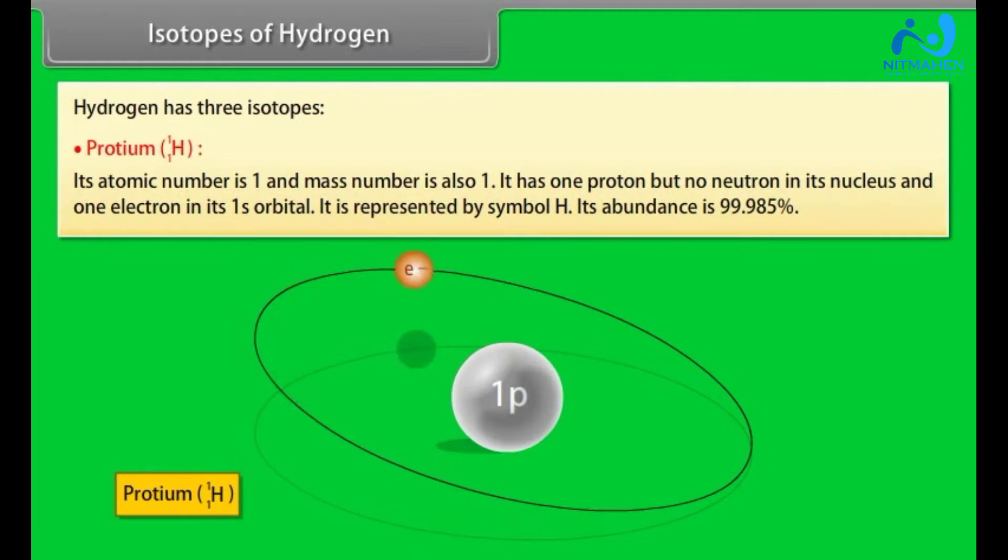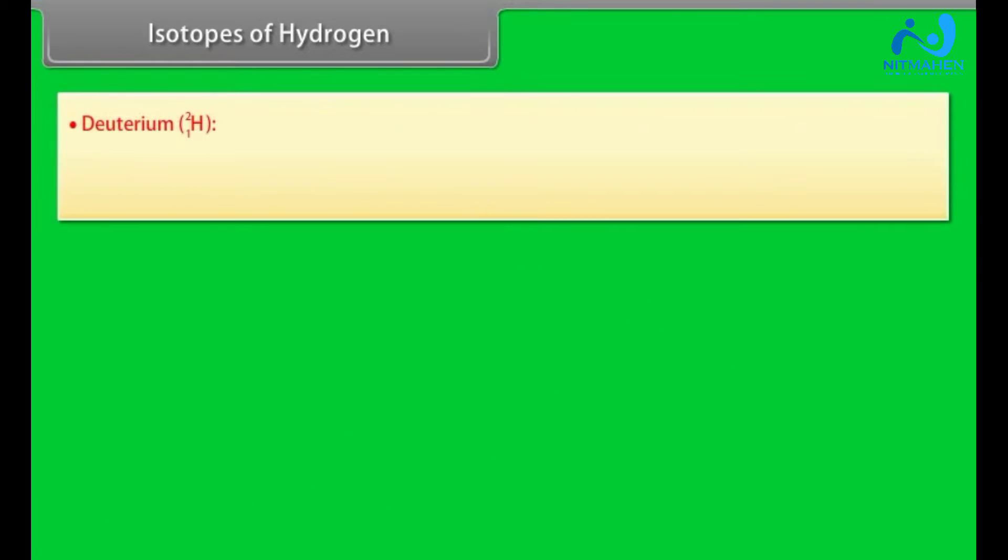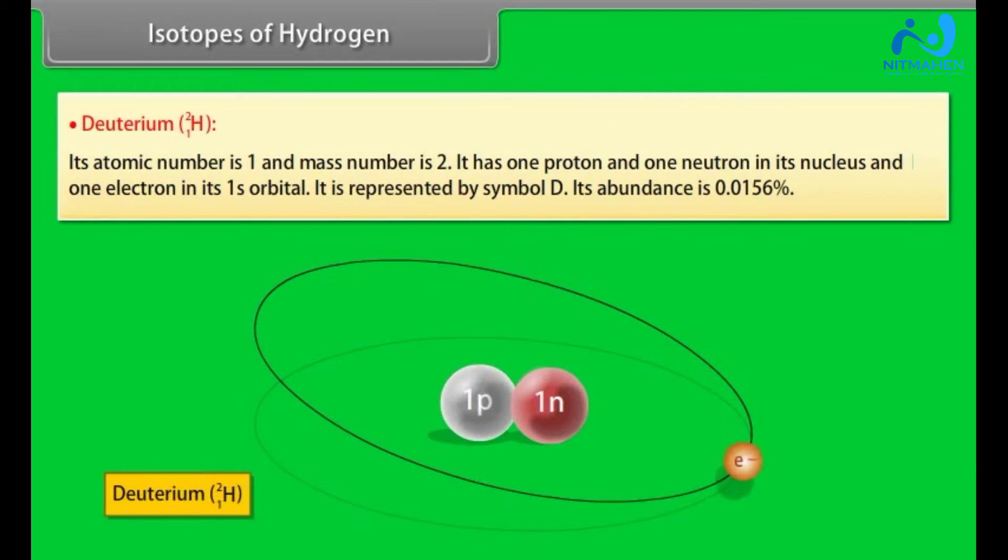Deuterium: Its atomic number is 1 and mass number is 2. It has one proton and one neutron in its nucleus and one electron in its 1s orbital. It is represented by symbol D. Its abundance is 0.0156%.